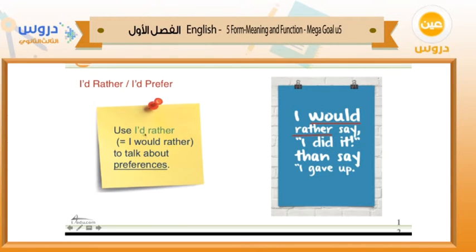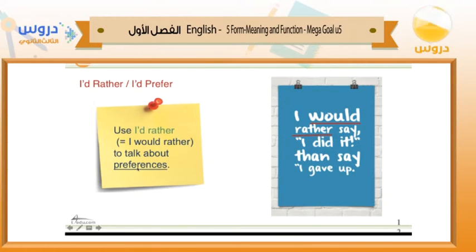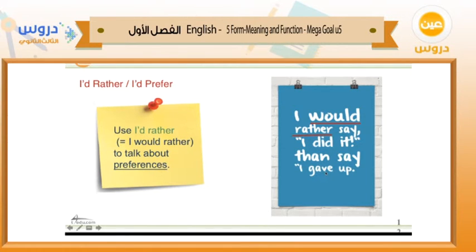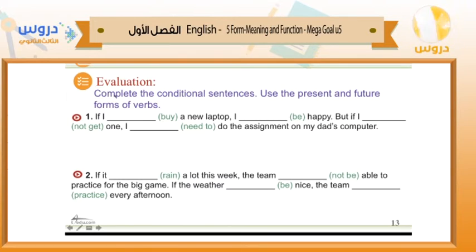What about 'I'd rather' or 'I'd prefer'? 'I'd rather' is an abbreviation of 'I would rather,' used to talk about preferences — what you like more than something else. For example: 'I'd rather say I do it than say I gave up.' This means I prefer to say I do it rather than give up. So 'I would rather' means I prefer one thing more than another.